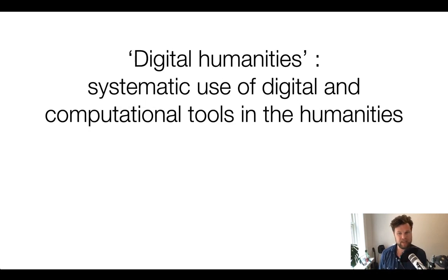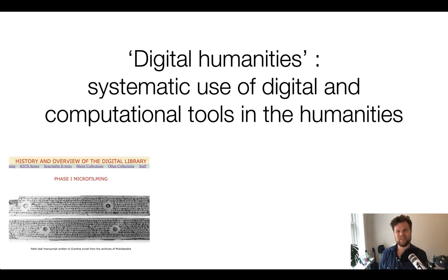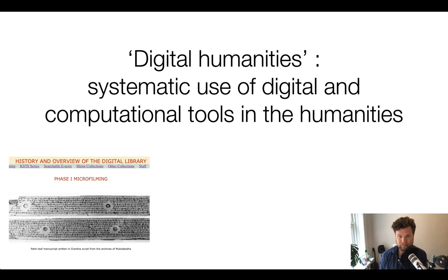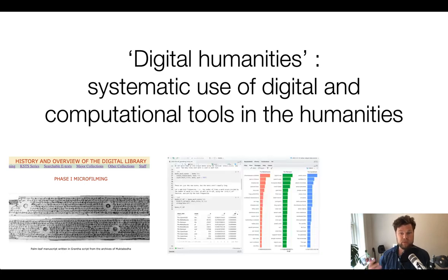Digital humanities is a fussy term. I'll use it simply to refer to the systematic use of digital and computational tools in the humanities, and I think there are two key aspects to that. The first is about digitization — the processes of making important texts and materials available in digital form, stored in databases and made searchable. In these videos I'll focus on the second key aspect: when we have materials available in digital form, a whole new realm is unlocked where we can do all sorts of new interesting analyses if we adopt some tools from the data science toolbox.